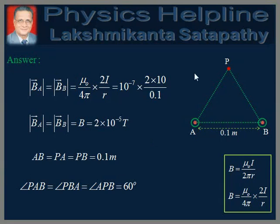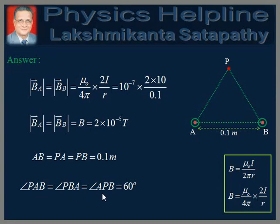In triangle PAB, we observe that AB equals PA equals PB. All sides are equal to 0.1 meters, so triangle PAB is equilateral. Therefore, all angles are each equal to 60 degrees. We have written: angle PAB equals angle PBA equals angle APB, which equals 60 degrees.